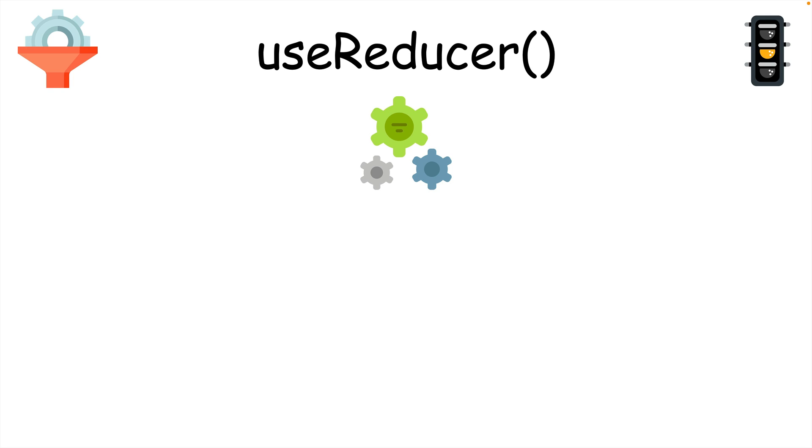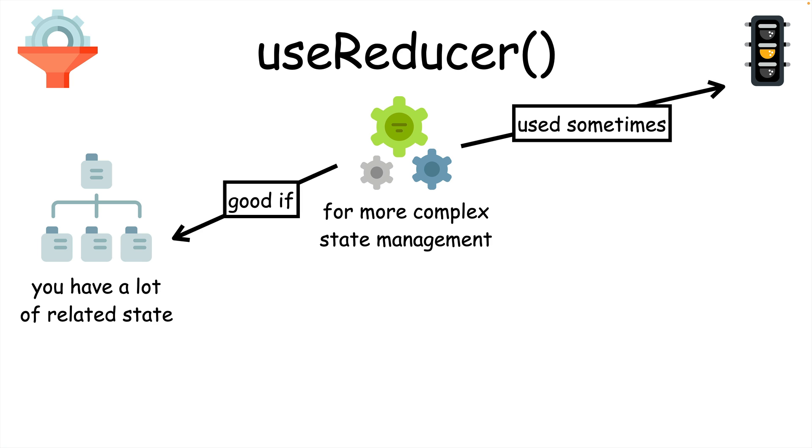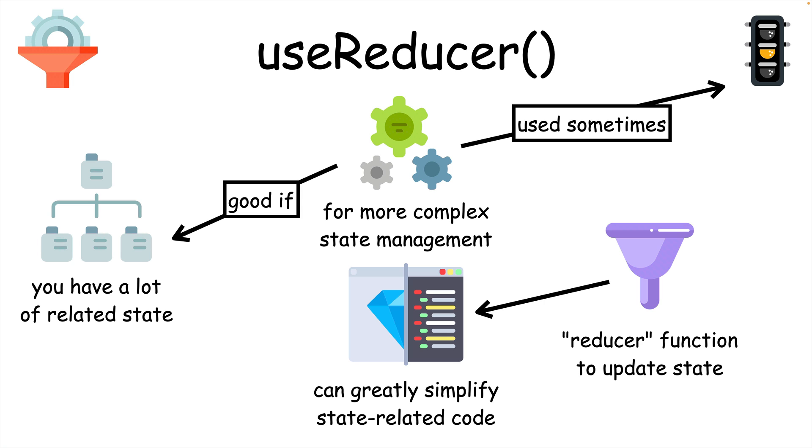useReducer is another state hook that's useful for performing more complex state management than useState. You won't need to use it very often, but it's worth adding if you have a lot of related state. useReducer uses a reducer function to update state, which can radically simplify your code because all the state updates can be done in a single function.